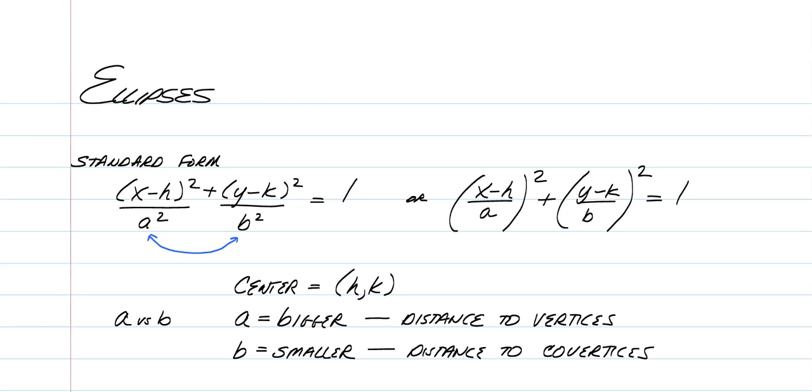Standard form of an ellipse. Ellipses have a main standard form, and that would be this first one. Just so you guys know, A and B are interchangeable, we'll talk about why in a minute. But when you're working with ellipses, you're going to get everything equal to 1.